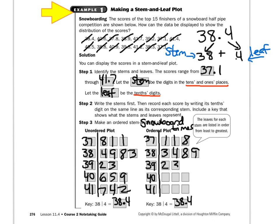2 and 3 are already in order, so leave that alone. Then put the 5, 6, and 9. Then put the 41s in order: 2, 4, and 7. Now that everything is in order and I have a key, I put my title — snowboard times — and box my answer. This final ordered one is the answer you want.